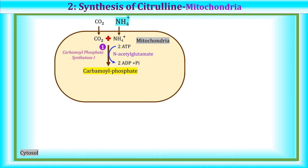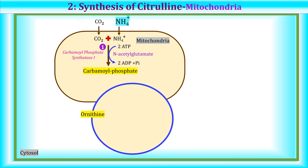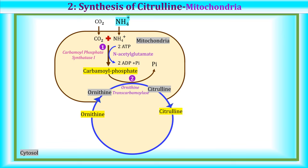The second step of the urea cycle is synthesis of citrulline, occurring in the mitochondria. Ornithine is present in the cytosol and must be transported into the mitochondria by ornithine-citrulline transporter. Once inside, the carbamoyl group from carbamoyl phosphate is transferred to ornithine to form citrulline, catalyzed by ornithine transcarbamoylase. Citrulline is then transported back to the cytosol for further reactions. Both ornithine and citrulline are transported by ornithine-citrulline transporters, and neither is normally found in protein structures as they lack a genetic code.